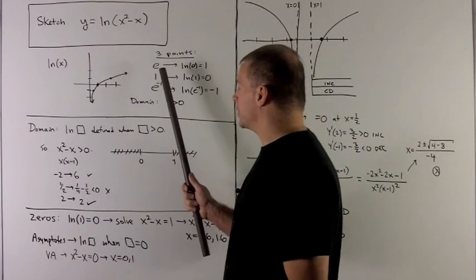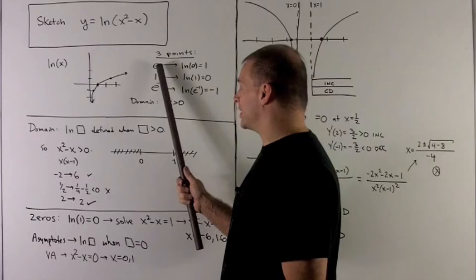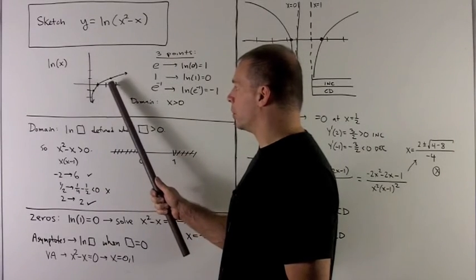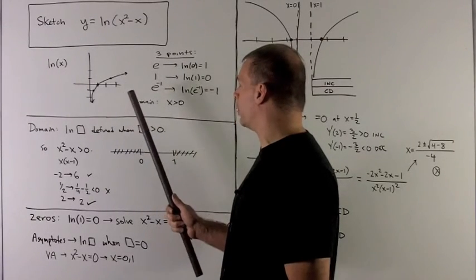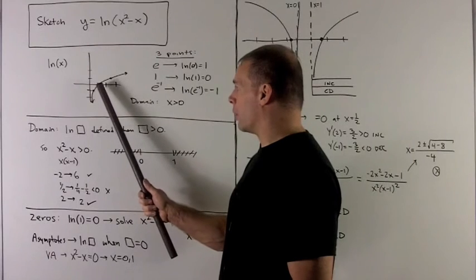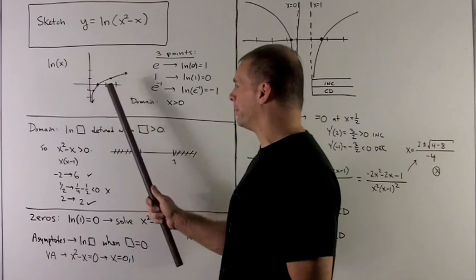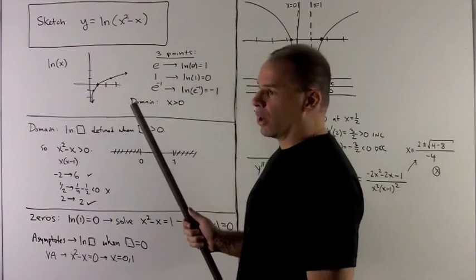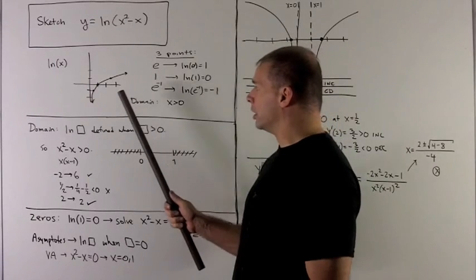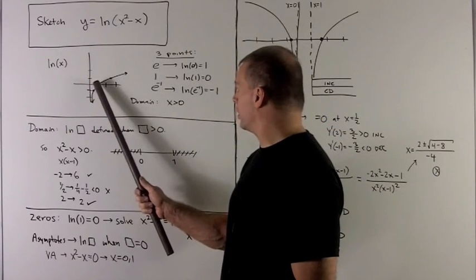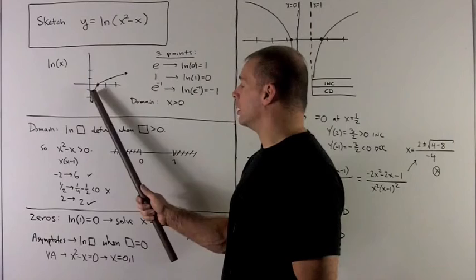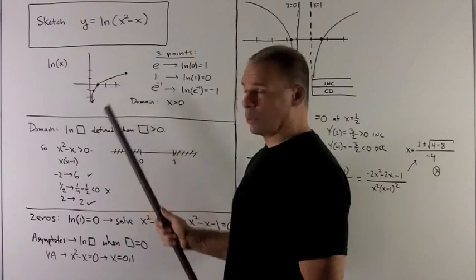So we plot these points. e is roughly 2.7, so I go over 2.7, up 1 gives me a point. I have the point over 1 up 0 gives me another point. And then e to the minus 1 is roughly 1 third, so that's going to be over 1 third and then down by 1. So those three points we want to memorize.